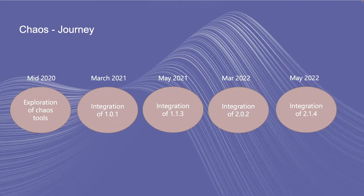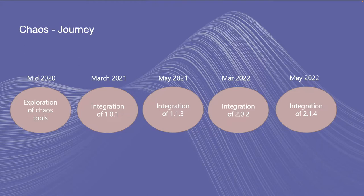In March, we integrated the very first GA of Chaos Mesh. Then in May, we did a couple more releases. This was the timeframe when we started onboarding our Lighthouse clients — the clients who could try it out and give us feedback. We were also learning how things work under the hood, especially for network chaos and stress chaos, which become very crucial not just from an execution perspective but also in understanding how they work internally. Clients started using Chaos Mesh; we enabled it on a few clusters where their services were deployed, and that's how we started.